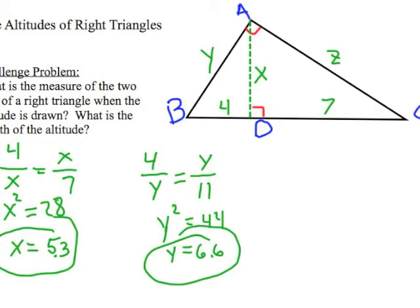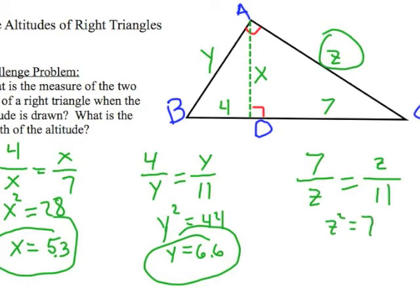All right, let's solve for Z. Well Z is the other leg of the triangle and so we're going to be putting that in the geometric mean position in our proportion because that leg of the triangle, Z, is the geometric mean between the near part which is 7 and the entire hypotenuse 11. So Z squared equals 77 and Z is going to equal 8.77 which is 8.8. All right, I hope you were able to figure that out.